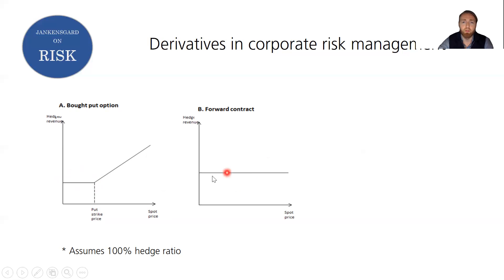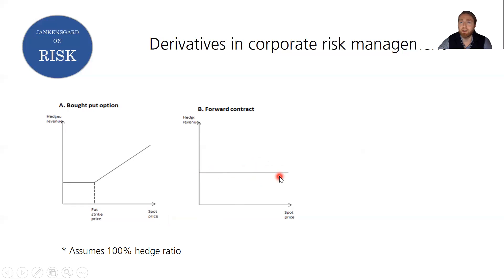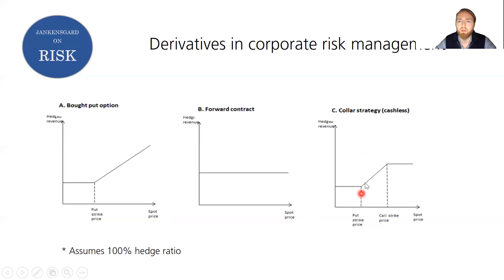With the forward contract you have more protection and less downside risk because the forward price kicks in sooner than the option strike price. You pay for that by sacrificing your upside potential entirely — you've locked in the price you'll obtain on your commercial sales, so there's no market price uncertainty at all. With the collar, there's some exposure between the two strike prices, but since you've sold 100%, your upside is capped at the call strike price.